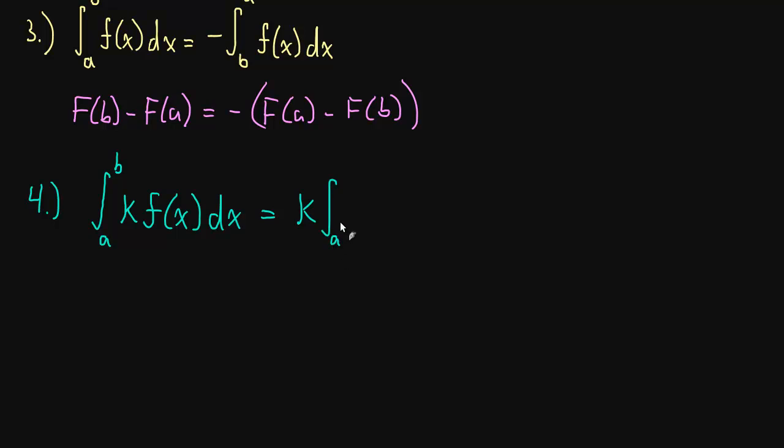So we've been doing things like this forever. So a really quick example is if we had something like the integral from 0 to 1 of 3x squared, we could write this as 3 times the integral from 0 to 1 of x squared. And I forgot my dx's. A lot of teachers will take off for that. Okay. So yeah, that's something we've been doing forever.